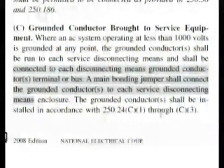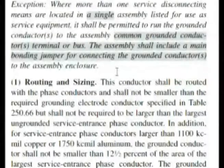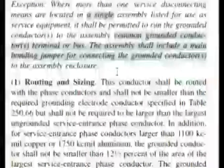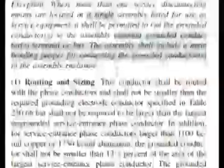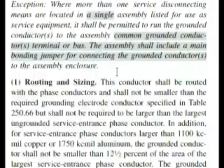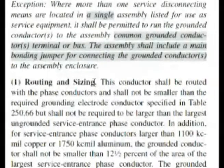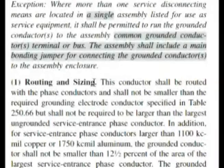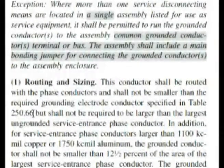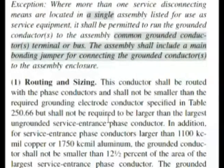As we go through here, we might want to start reading this. We'll go up to the next column to continue. Remember our strategy: if we don't have an exact reference, we read the first sentence or two and then continue reading the bold headings. Here we have routing and sizing. Our question said it could not be smaller than what was specified in a certain table. Looking here, we see table 250.66. Reading this, it pretty much matches our question. So the correct answer is A — table 250.66.